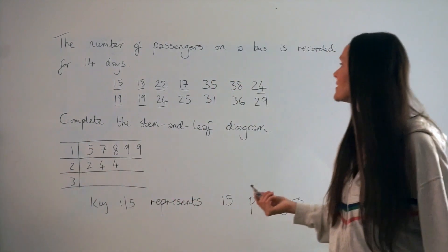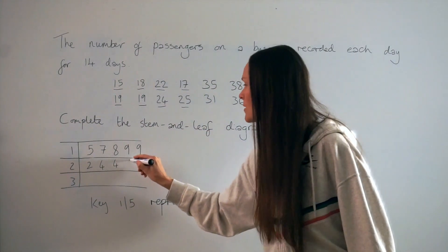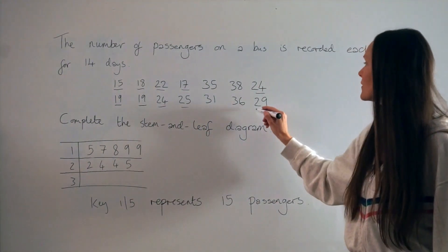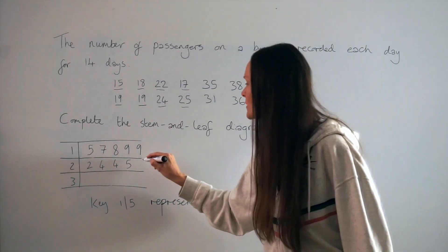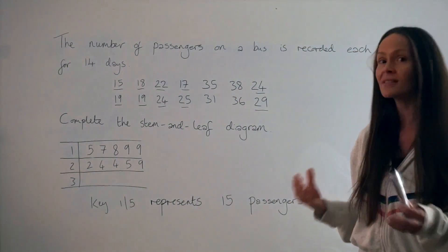The next highest number is 25, so I need to write down a 5. And then we have 29, so at the end of the row I write a 9. So that's all the numbers starting with a 2.